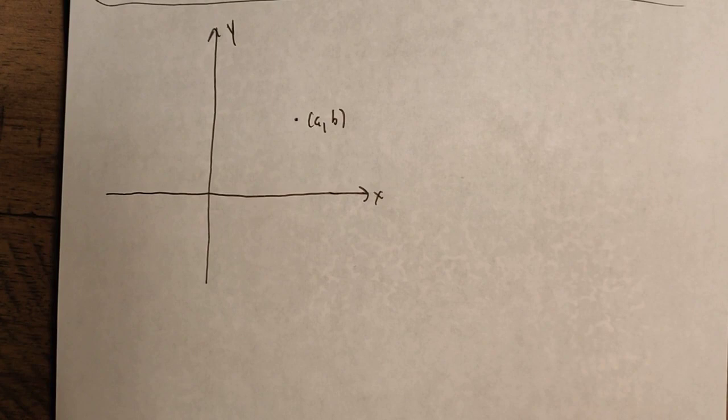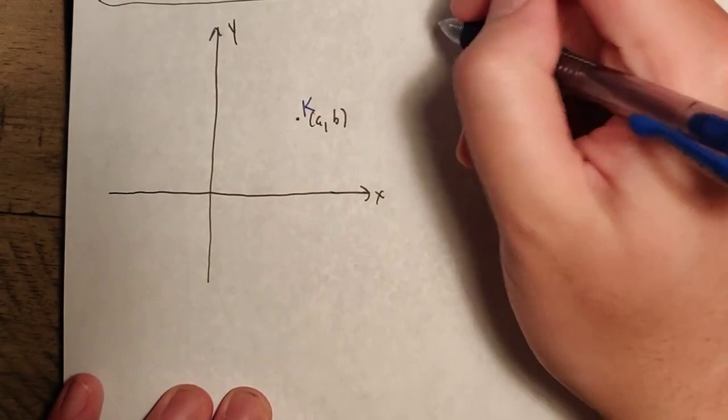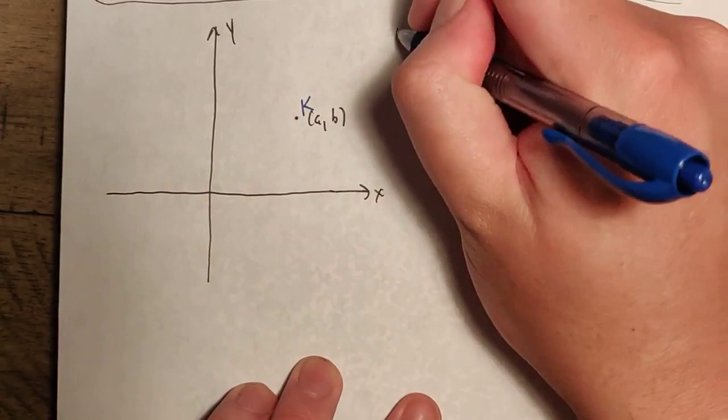Another nice thing about reflections is that they work very well in the coordinate plane. Let's look at this point A, B — I want to call this one K. And now we can reflect K over specific lines. For instance, one thing we can say is that we want to reflect this point K over the x-axis.